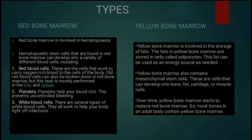Ab aata hai yellow bone marrow. Yellow bone marrow hamare fats ke storage mein involved hai. Jo fat hamaari body mein hota hai wo yellow bone marrow mein store kiya jaata hai, aur in cells ko adipocytes kehte hain. Yeh fat humein energy source provide karta hai. Yellow bone marrow mein mesenchymal stem cells hote hain jo develop hokar bone, fat, cartilage, ya muscle cells mein develop ho jaate hain. Over time, yellow bone marrow red bone marrow se replace hone lagta hai, aur adults mein zyada yellow bone marrow hota hai.